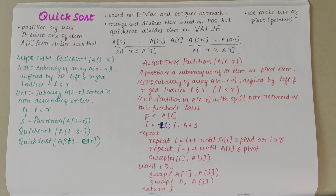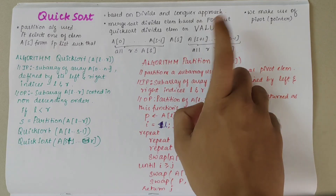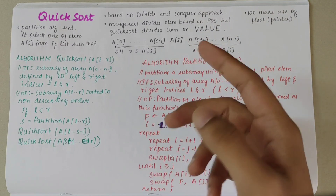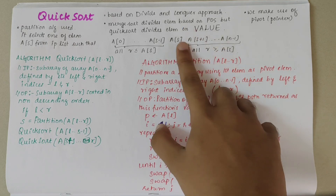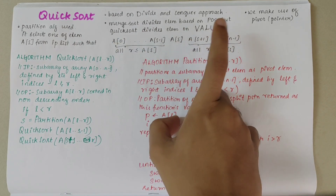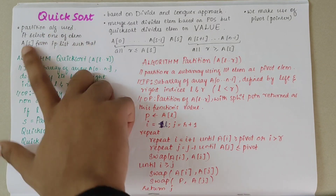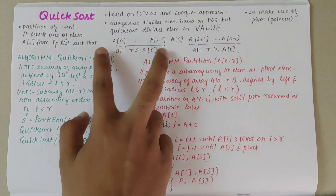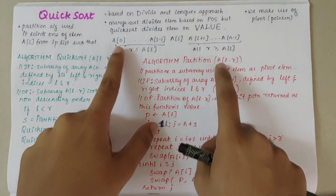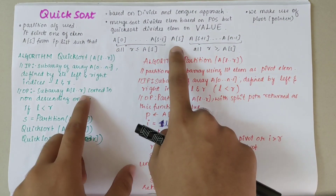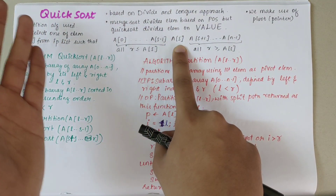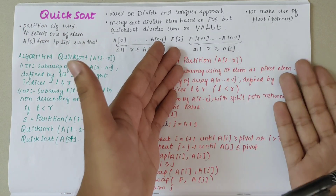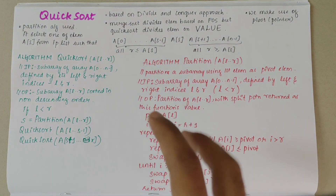In this video we'll be looking into QuickSort. QuickSort is one of the sorting techniques based on the divide and conquer approach, which says that you divide a particular problem based on its value. Previously in merge sort, we divided elements based on position, but here QuickSort divides elements based on value. A partitioning algorithm is used — it selects one element a[s] from the input list such that all values to the left of a[s] are less than a[s], and all values to the right are greater than a[s], making it the partitioning element.